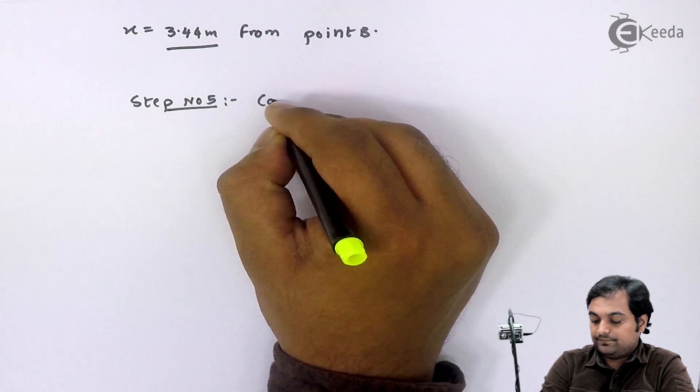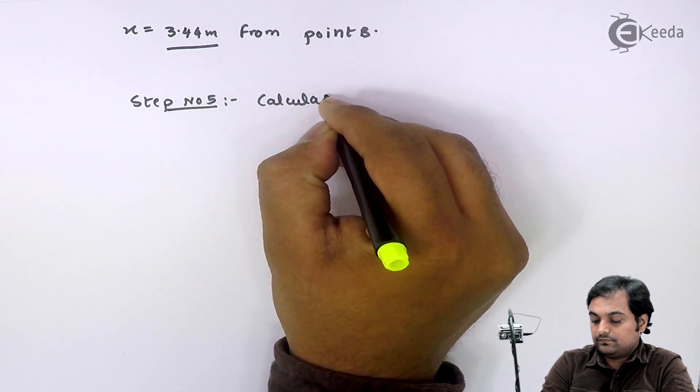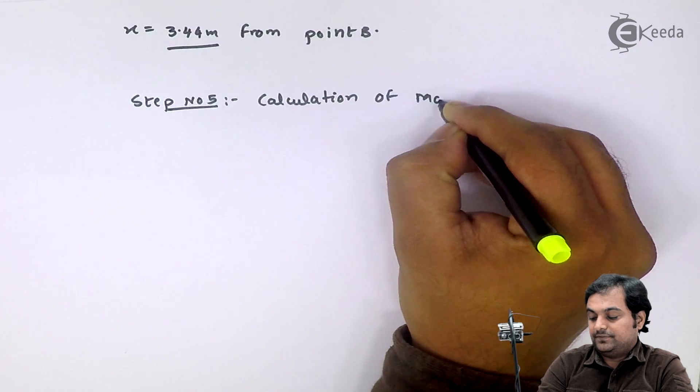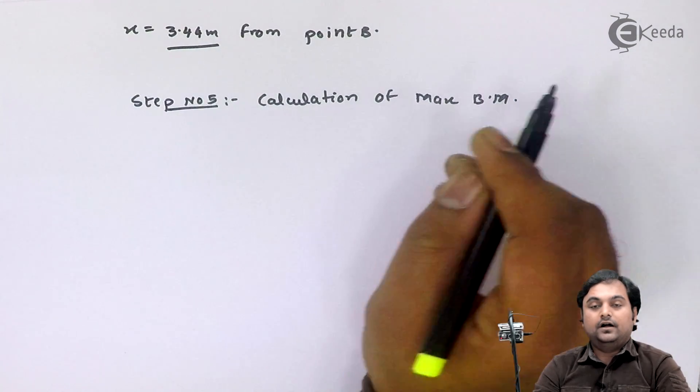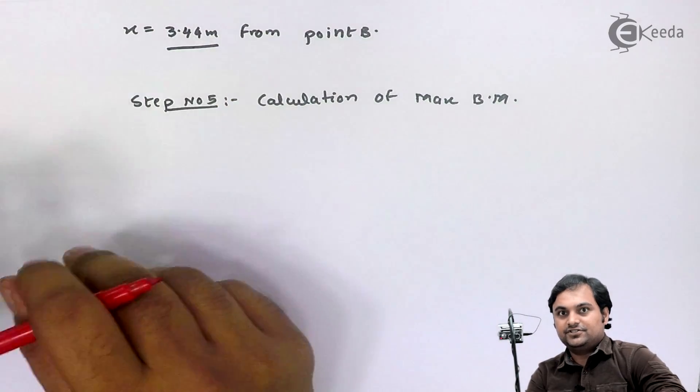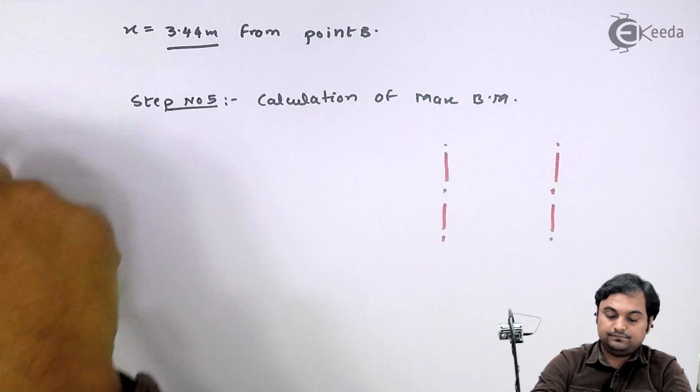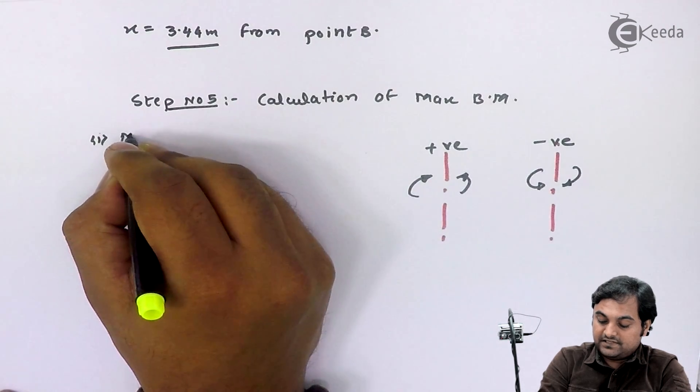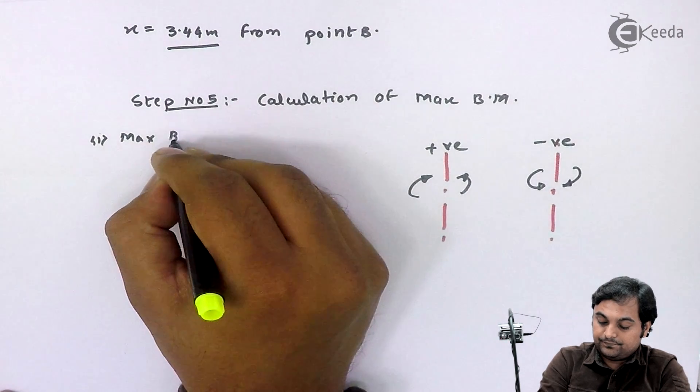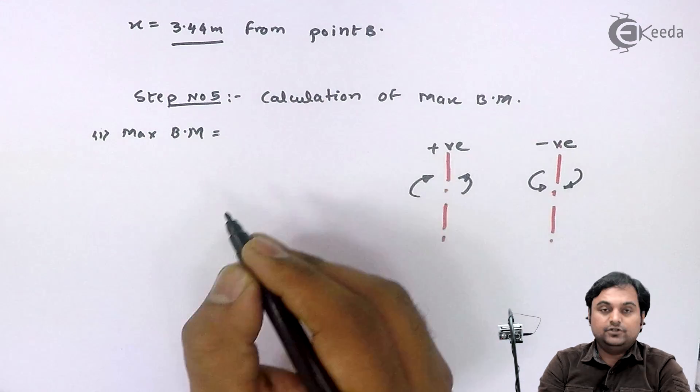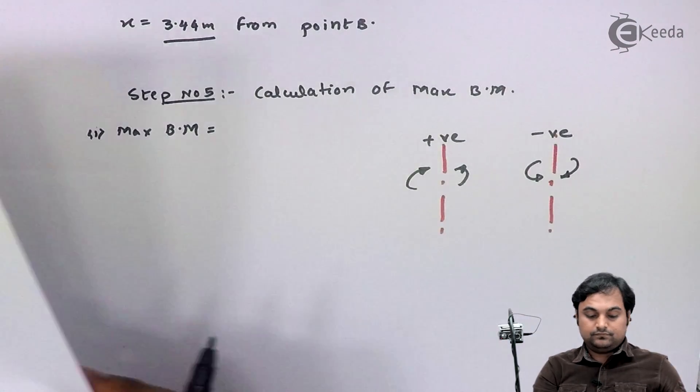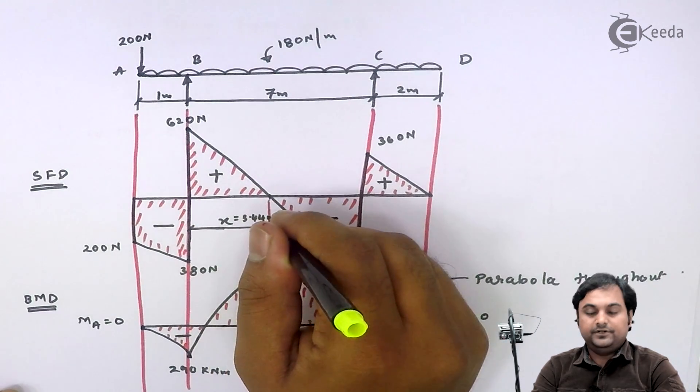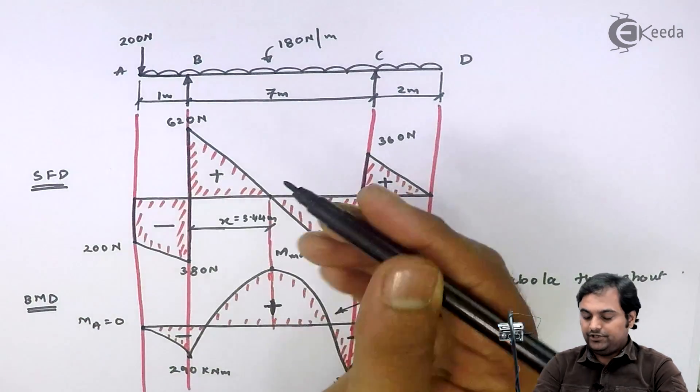Step number 5 is calculation of maximum bending moment. Again, I will be drawing the convention here. Maximum BM will be equal to, I am taking moment at 3.44 meters from point B.